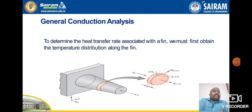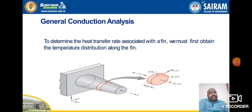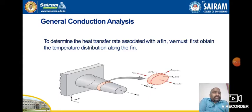Next, how we are going to analyze the fin — the derivation is very important. To determine the heat transfer rate associated with the fin, we must obtain the temperature distribution along the fin. For example, consider a circular fin. We take one element for analysis with surface area dAs. The heat moves in one direction — unidirectional flow — that is QX. When it exits the element, it becomes QX+dX, over length dX. The convective heat transfer coefficient is H, over area dA.